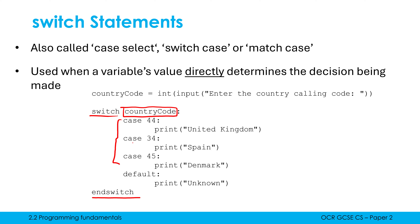We then have multiple cases — as many as you want, but at least one. A case is a particular condition within the switch. So 'case 44' is comparing country code to 44. If country code is 44, it's going to print United Kingdom. If country code is 34, it prints Spain, and 45 prints Denmark. It's comparing our variable directly to the value after the case keyword, and the indented line or lines of code beneath each case will run if that case is true.